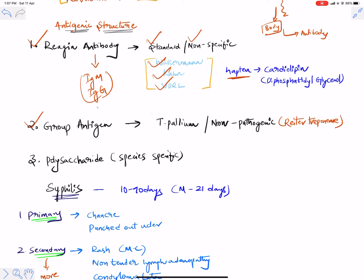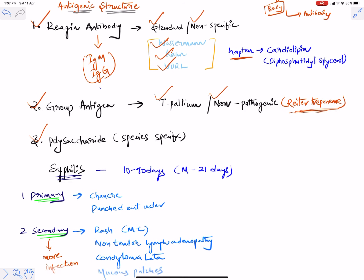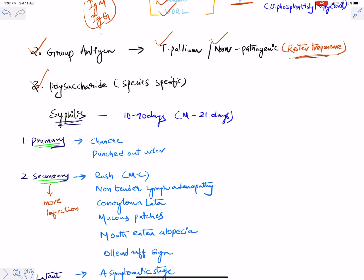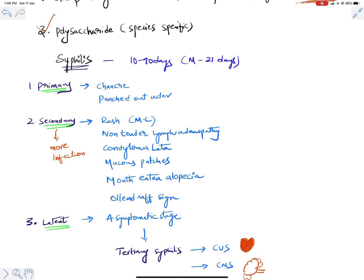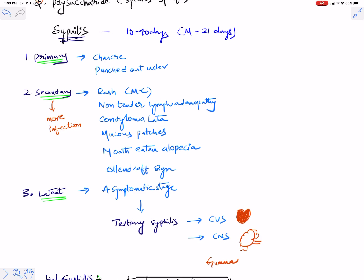The second method involves group antigens: identifying T. pallidum versus non-pathogenic pallidum — the Reiter strain is non-pathogenic. The third method is identifying the polysaccharide, which is species-specific — the polysaccharide configuration is specific for each species or serovars of T. pallidum. The incubation period is 10 to 90 days, with a mean of 21 days.